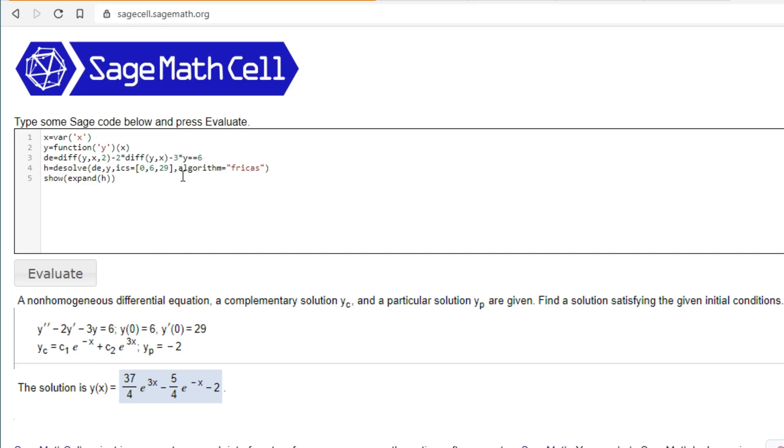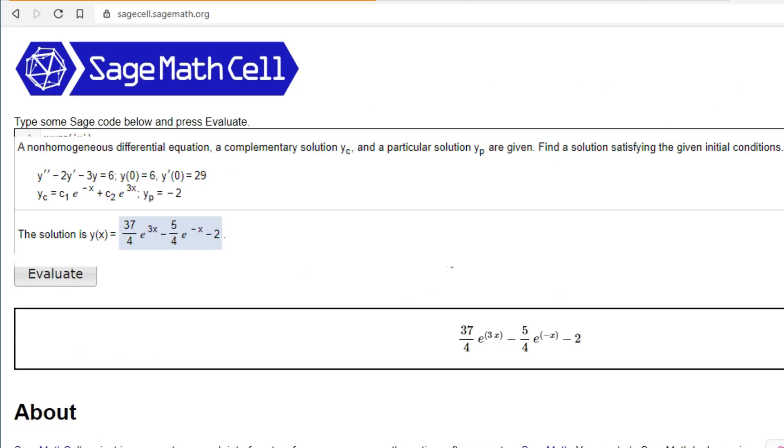And comma again. You can ignore the yc and yp for using SAGE. So hit evaluate. And there you go. That gives us the solution for y of x.